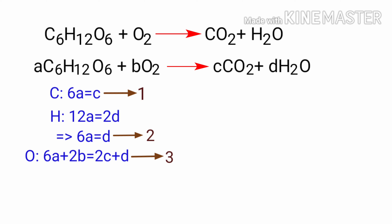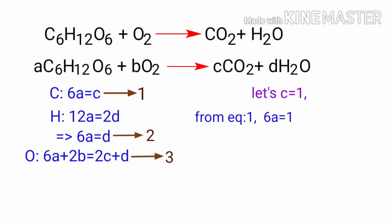Now we can solve the three simultaneous equations. It looks almost impossible, but we know that the coefficients must be integers. Let's set C equal to 1. Then from equation 1, 6A = 1, so A = 1/6.